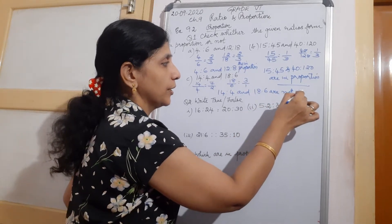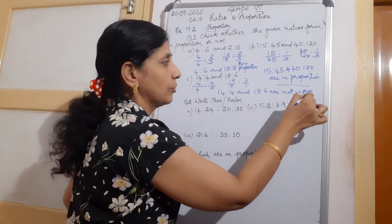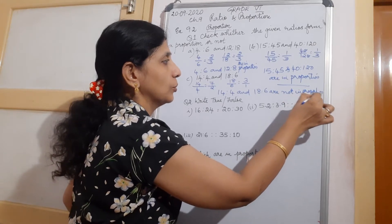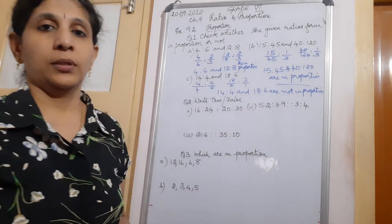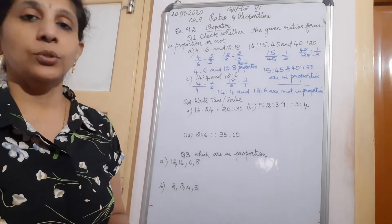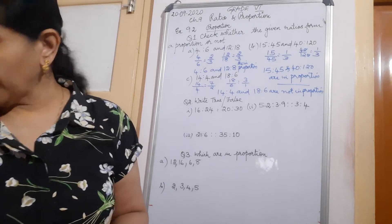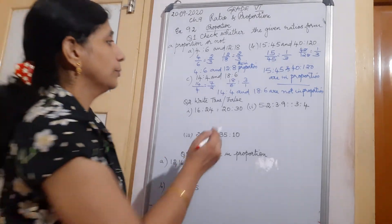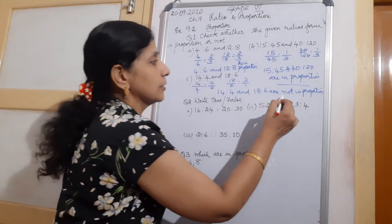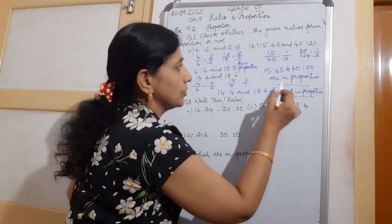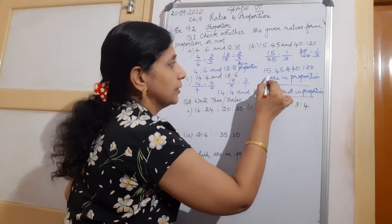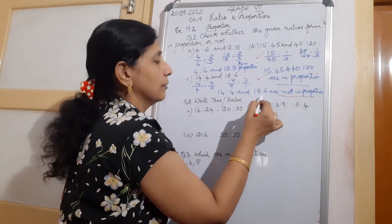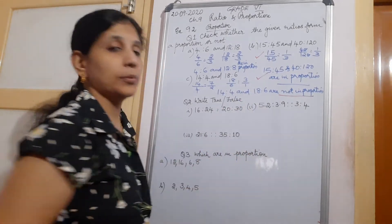How did you get not in proportion? Because you calculated that both ratios are not equal. Equivalent ratios are proportions. So since they are not equal here, they are not in proportion. The first two pairs were in proportion, and this third one is not in proportion.